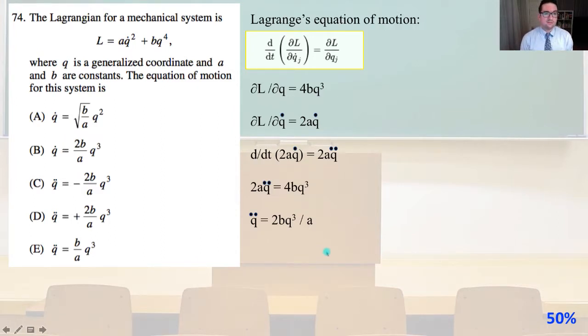The Lagrangian for a mechanical system is L equals AQ dot squared plus BQ to the fourth, where Q is a generalized coordinate and A and B are constants. The equation of motion for this system is. So Lagrangian's equation of motion is given right here. D dt times the quantity partial of L divided by partial of Q dot equals partial of L divided by partial of Q.